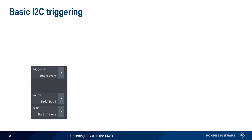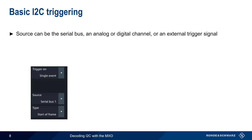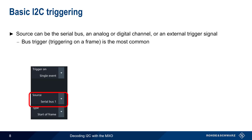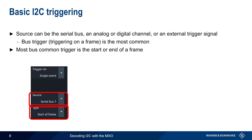The next step is configuring a trigger. Basic forms of triggering used to initiate data acquisition include an event on the serial bus, a voltage on an analog or digital channel, or an external trigger signal. A bus trigger — that is, triggering on an I2C frame or on its contents — is the most common form of trigger used when performing I2C decodes. In most cases, the bus trigger occurs on either the start or the end of the frame.